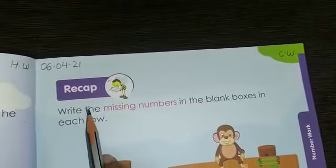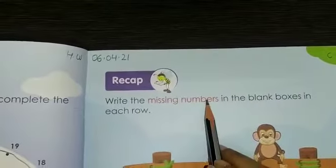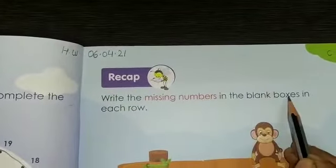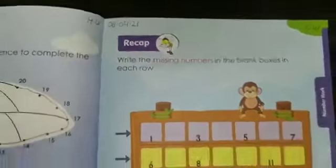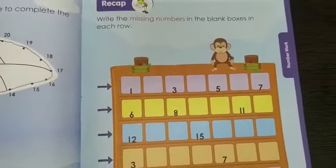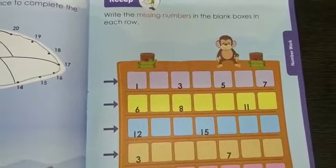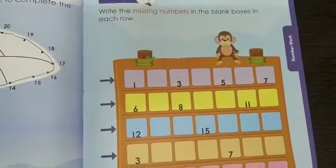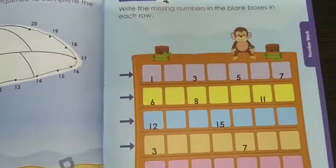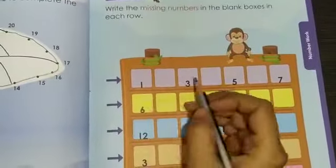Now write the missing numbers in the blank boxes in each row. Here you can see here few numbers are written and few blank boxes are given to you. You have to fill that blank boxes. Now start counting with me.